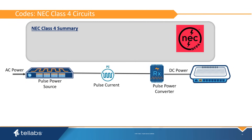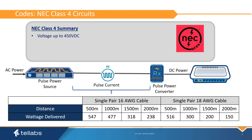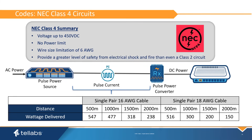Class IV is a new circuit term defined in 2023 in the NEC. Class IV systems are referred to as fault-managed power systems. Class IV power can deliver higher wattages and longer distances than Class II. These systems are not power limited and can deliver hundreds of watts of power. They intelligently limit the amount of energy that can go into a fault, mitigating the risk of shock or fire and allowing installation using methods much like power limited circuits.